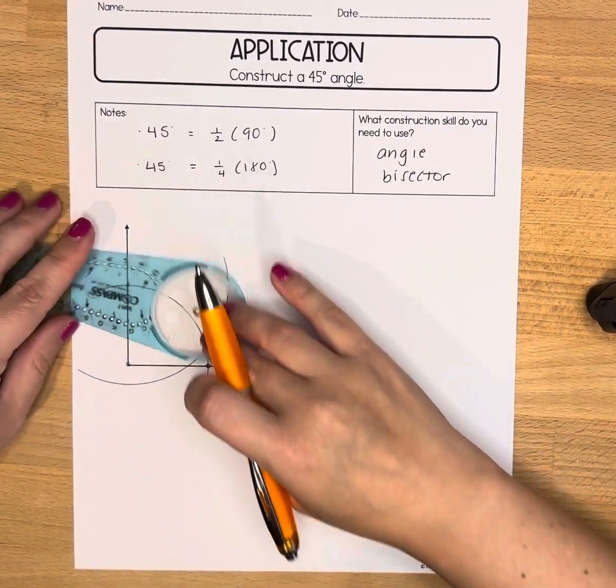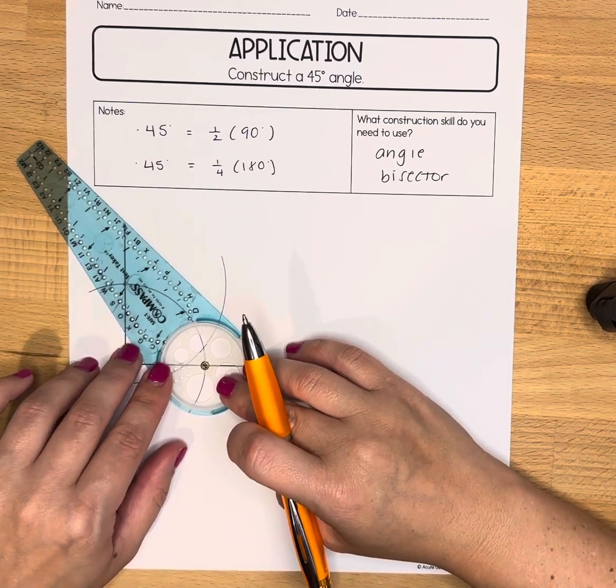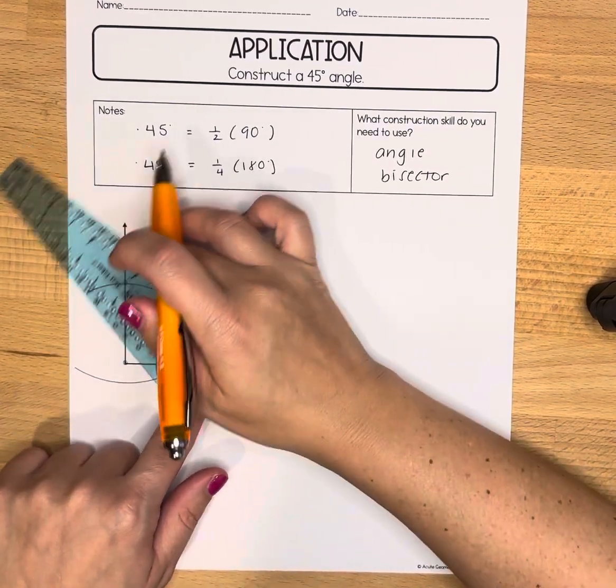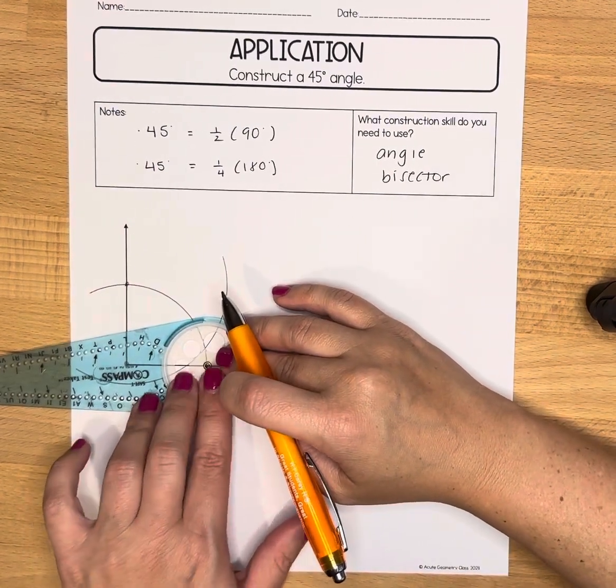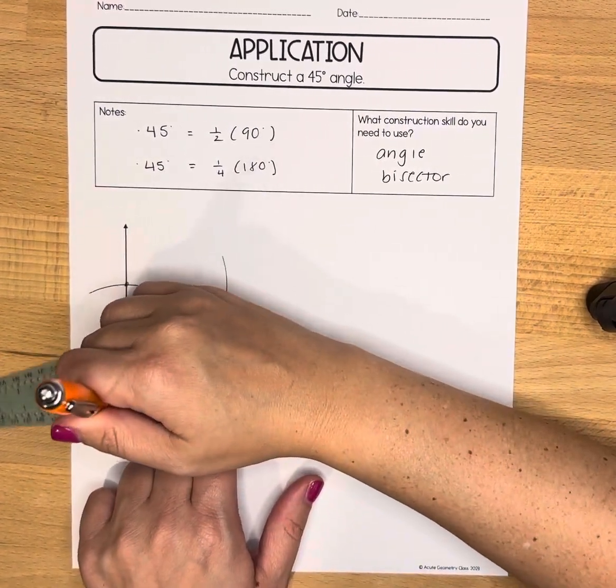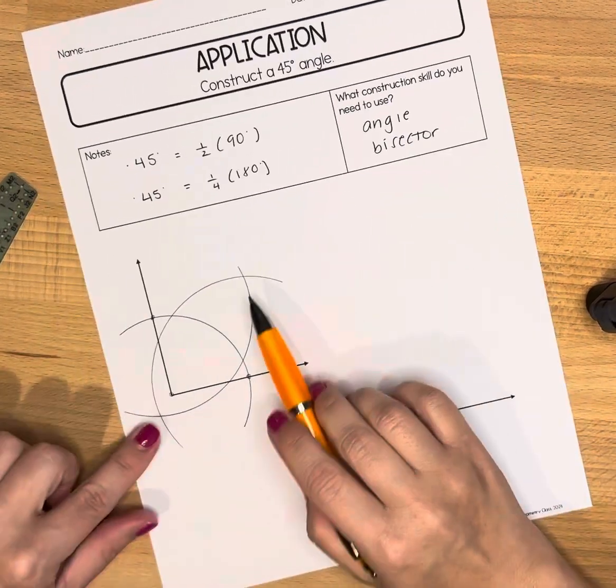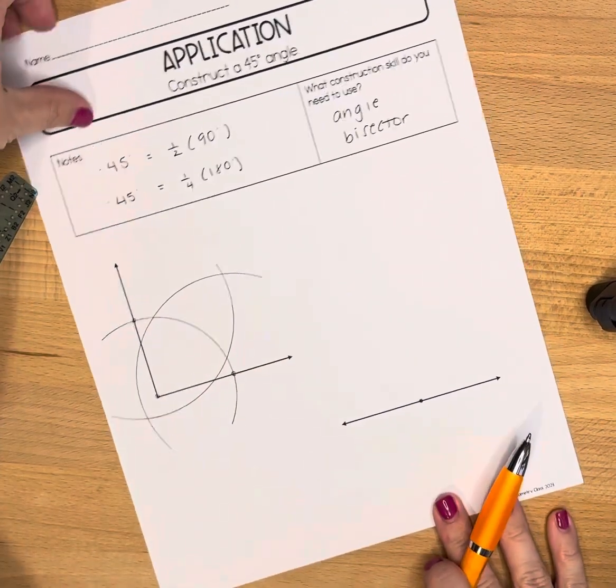Once we have that, we're going to remember that measurement and put our compass on the other point and repeat it. Our two arcs should now intersect one another.